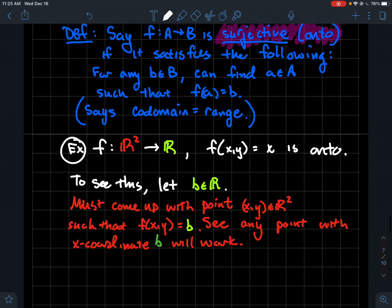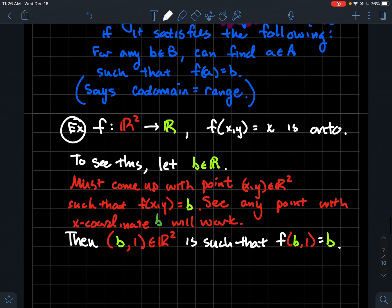You see that there are lots of things in the domain that get sent to b. And so all you need to do is just pick one and demonstrate it. So the point b, comma, one, so by the way, back to resuming how the proof might go. Well, then notice the point b, comma, one. That's definitely a point that's in the domain R2.